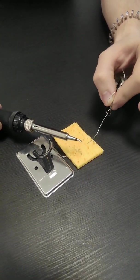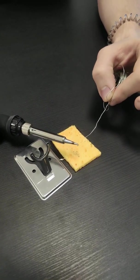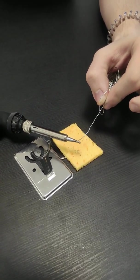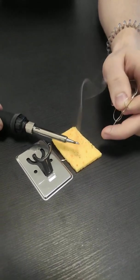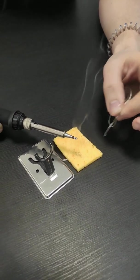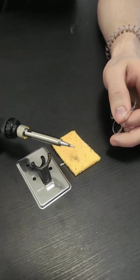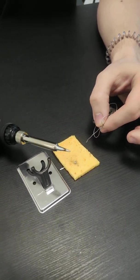If your soldering iron tip turns black or something like that, then just add some more solder to it like this. After that, you can wipe it off in order to get a perfect tip for soldering.